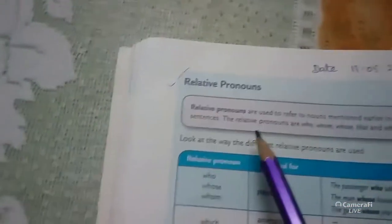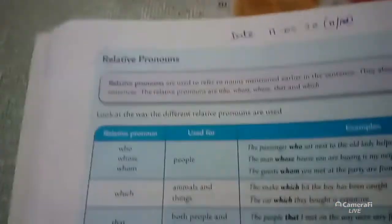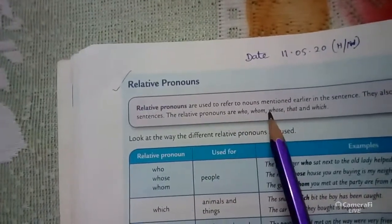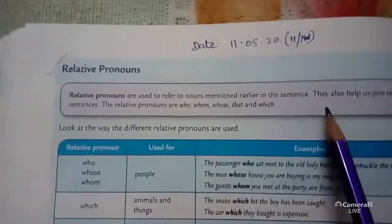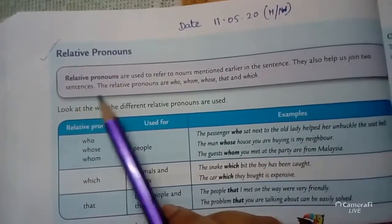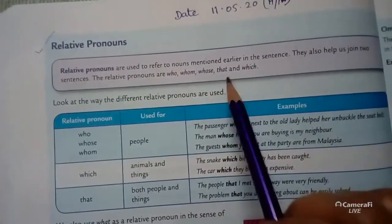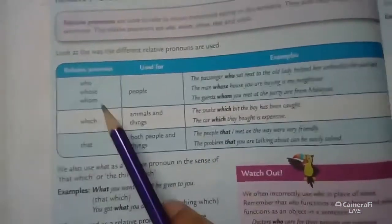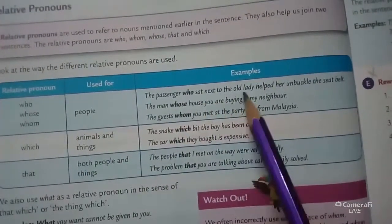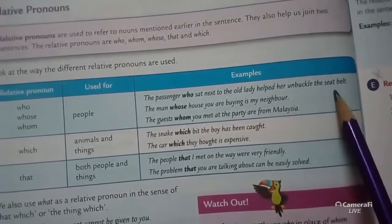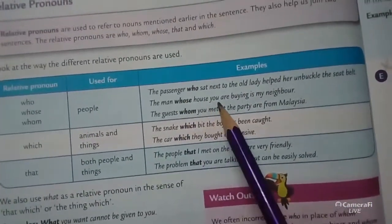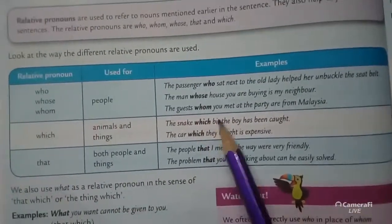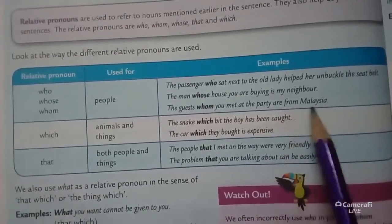Now relative pronouns. Relative pronouns are used to refer to a noun mentioned earlier in the sentence; they also help us join two sentences. The relative pronouns are: who, whom, whose, that, and which. Who, whose, and whom are used for people. Examples: 'The passenger who sat next to the old lady helped her unbuckle the seat belt.' 'The man whose house you are buying is my neighbor.' 'The guests whom you met at the party are from Malaysia.'